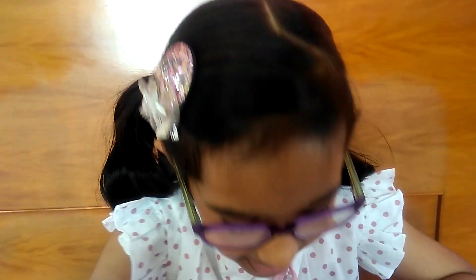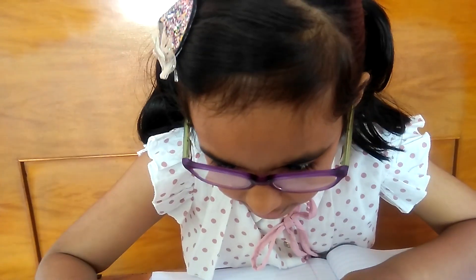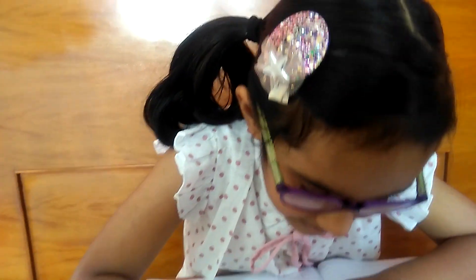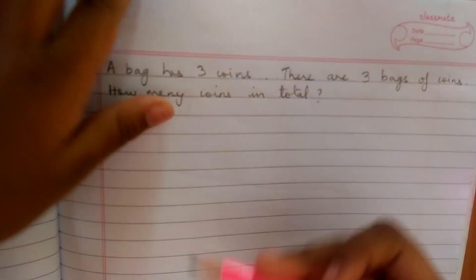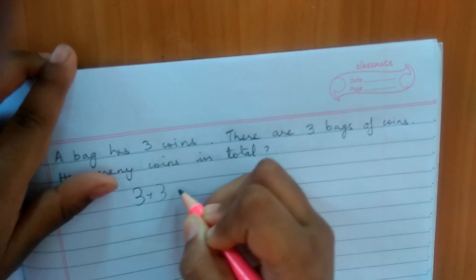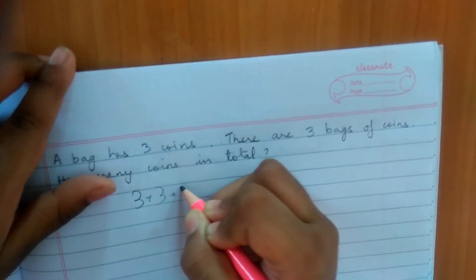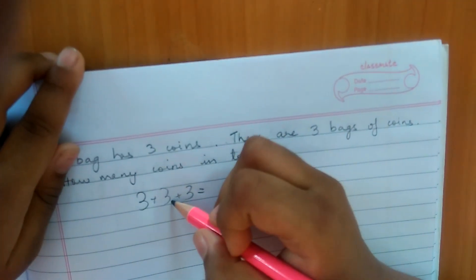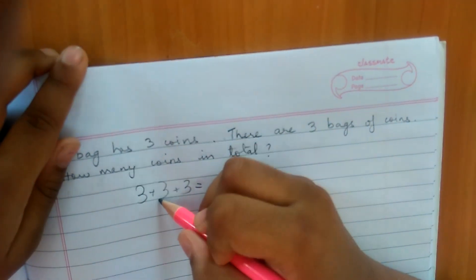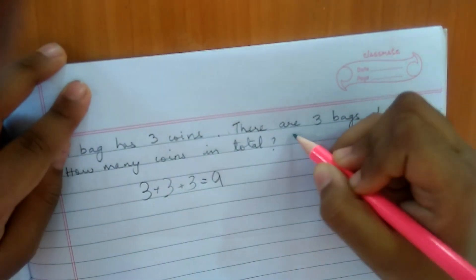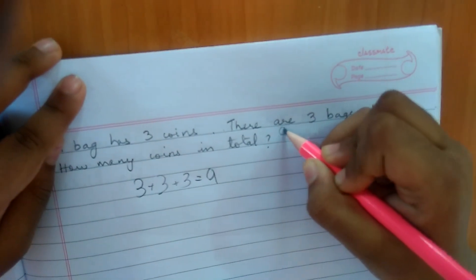Let's take an example. A bag has three coins and there are three bags of coins. How many coins in total? It will be three plus three plus three. Three plus three is six, six plus three is nine. So the answer is nine!